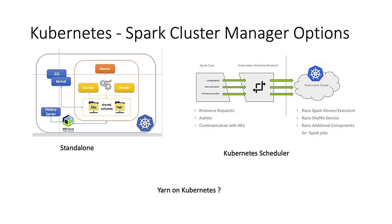When running Spark on Kubernetes, you have several options. You can run Spark as a standalone scheduler on Kubernetes — you get a Spark master pod, Spark worker pods, volumes mounted on master and workers to share data between driver and executors, pods for Jupyter Gateway as your notebook interface, and pods for a history server with shared persistent volumes.